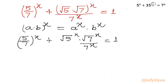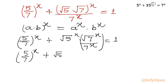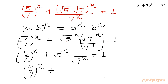Now I will use the a^x / b^x property here. So I can write (5/7)^x + (√5)^x · (1/√7)^x = 1. Or we can write (5/7)^x + (√5/√7)^x = 1, which simplifies to (5/7)^x + (√5/7)^x... wait — (√(5/7))^x = 1.